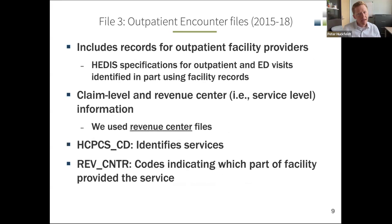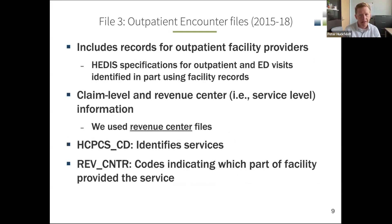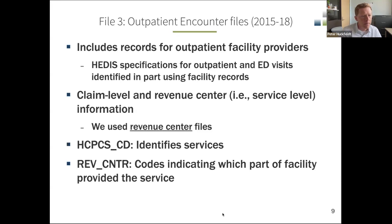The third file we used was the outpatient encounter files, which includes records for outpatient facility providers. The HEDIS specifications for outpatient and ED visits are identified in part using these facility-level records. Similar to the carrier encounter files, the outpatient file includes claim-level summary information but also service-level information at the revenue center level. We used the revenue center files, similar to the carrier data, using HCPCS codes to identify specific services. There is a revenue center code indicating which part of an outpatient facility provided a given service.